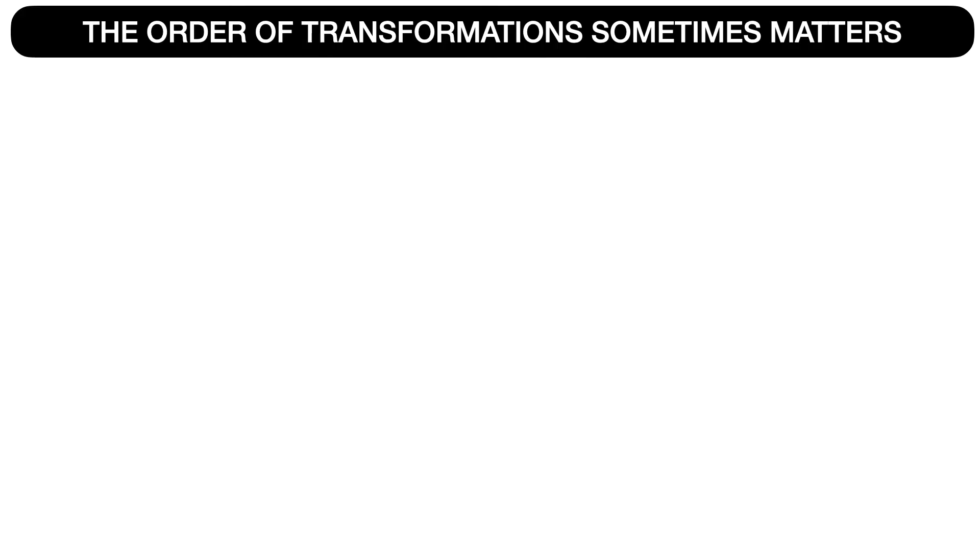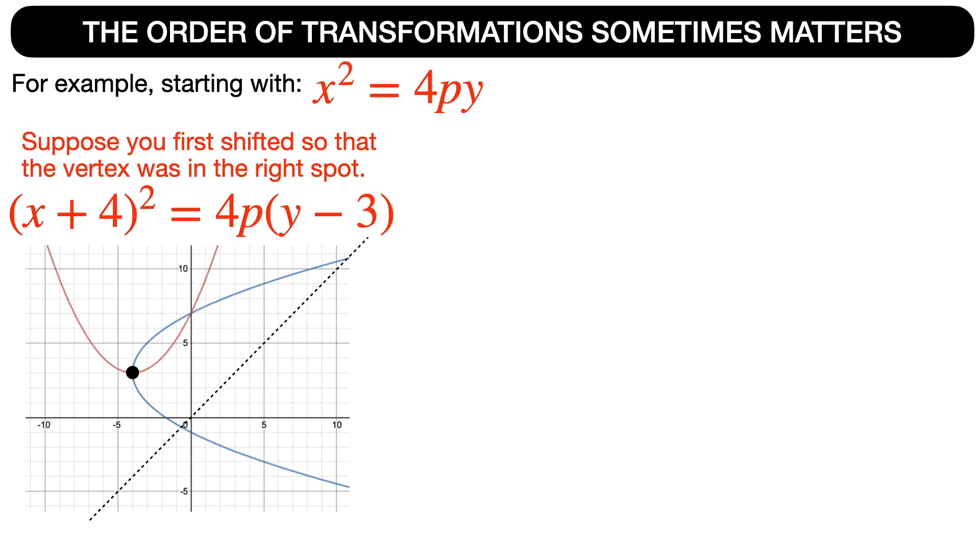Now the order of transformations sometimes matters. I wanted to bring this up because suppose you started with the equation x² = 4py. And then first you shifted with the plan that you would then reflect it later in order for it to be equivalent to the blue one. So if you first shifted it to the right spot, you'd get (x+4)² = 4p(y-3). You just replace x with (x+4) and y with (y-3).